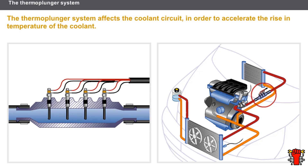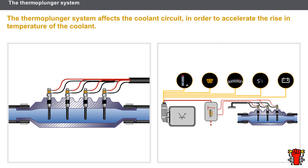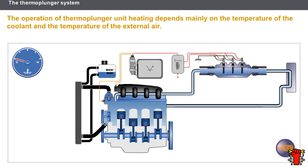The three or four thermo plungers are located on the water unit on the coolant circuit between the cylinder head and the heater matrix. Thermo plungers are incandescent plugs, each supplied with battery voltage via a relay.